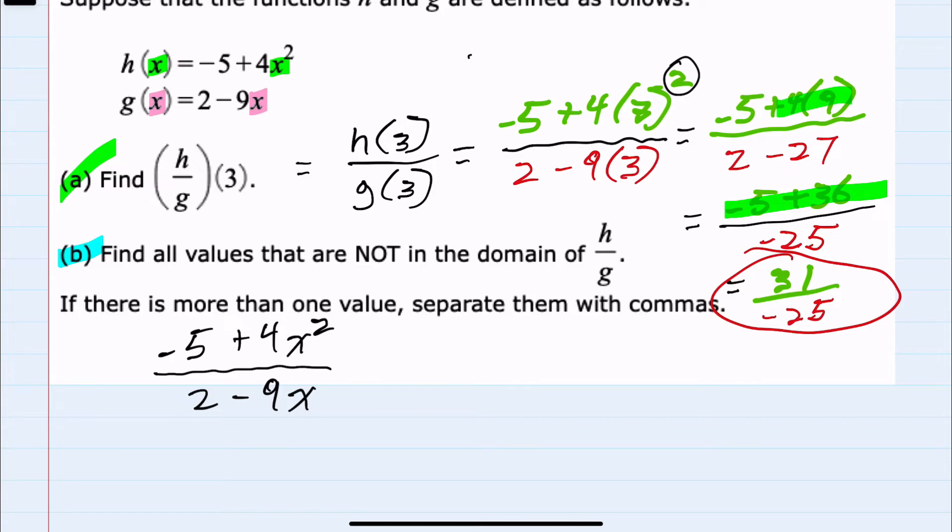If I set that denominator 2 - 9x = 0, to find what value of x gives a 0 denominator, I can solve by moving the 9x to the other side to isolate it: 2 = 9x. Then, dividing both sides by 9...